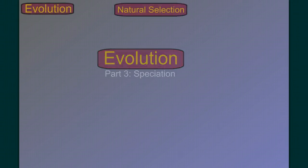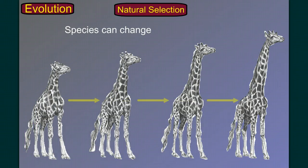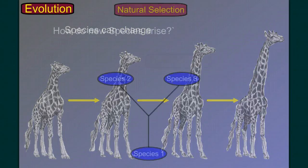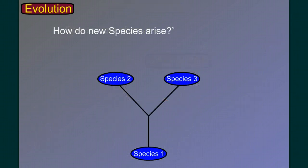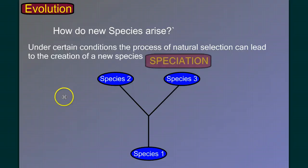If you recall, in our last discussion on natural selection, with Darwin's ideas we were able to explain how species could change over time. But we were left at the end of that video with a question: where do new species come from? How do they arise? It turns out that under certain conditions, the process of natural selection can lead to the creation of new species. We call that speciation.